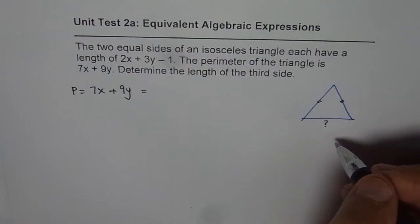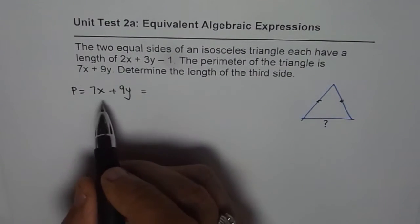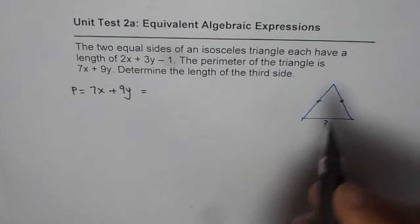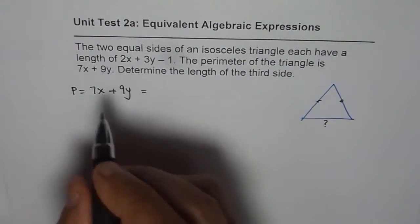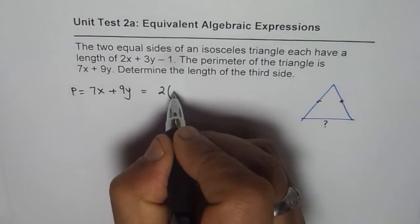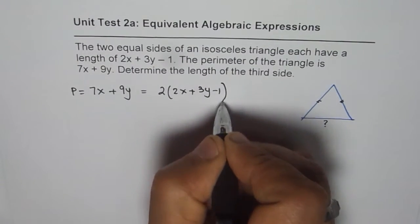So we can find the third side from here. The first side is 2x + 3y - 1, which is also equal to the second one. So we can write this as 2 times (2x + 3y - 1).